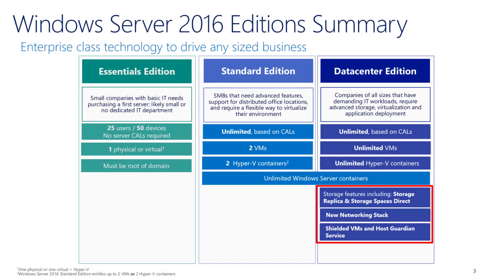When we take a look at the different editions, from an OEM perspective we've still got Essentials Edition which has had incremental updates, but the important focus area is between Standard Edition and Data Center Edition. You'll notice that Data Center now has additional capabilities. For those who worked with Data Center and Enterprise Edition prior to Server 2012, it did have differentiating features back then, but with Server 2012 and 2012 R2 they changed to feature parity. Now with Server 2016 Data Center has additional features again.